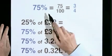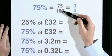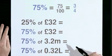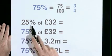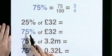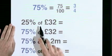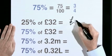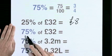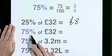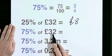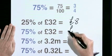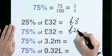75% is 75 out of 100, which is three quarters. 25% is one quarter. 25% of 32 pounds is 8 pounds, so 75% of 32 pounds must be three times as much: 24 pounds.